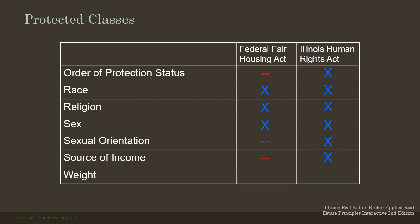Source of income is protected under the Illinois Human Rights Act. For example, if you're a waitress and your income comes primarily from tips, I couldn't say, 'I'm not going to rent to you because your tips vary wildly and you might not be able to make your rental payments.' Because of your source of income — that's going to be protected under the Illinois Human Rights Act. Weight currently has no protection — sort of like height.